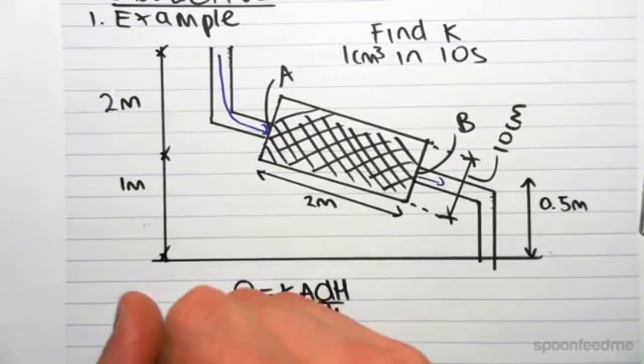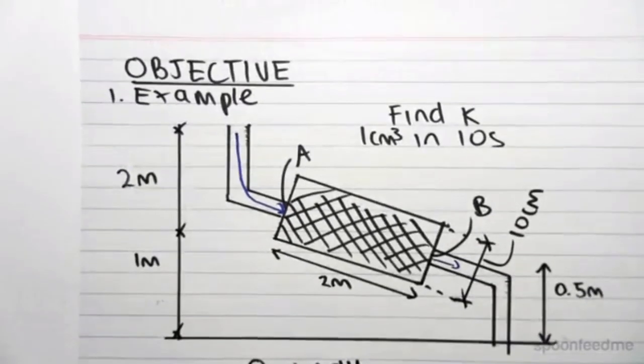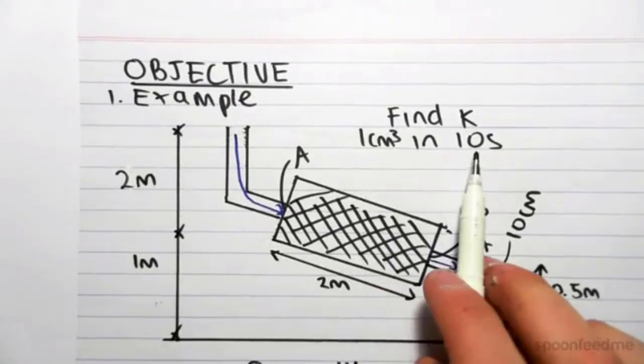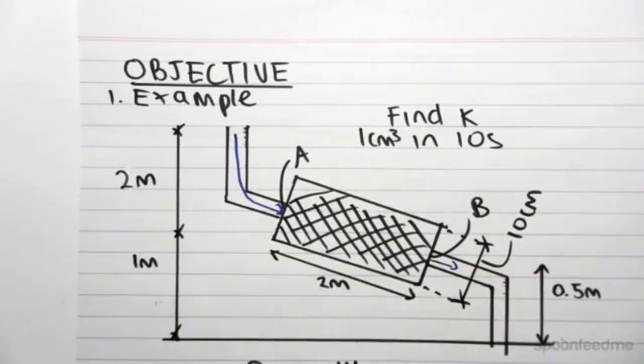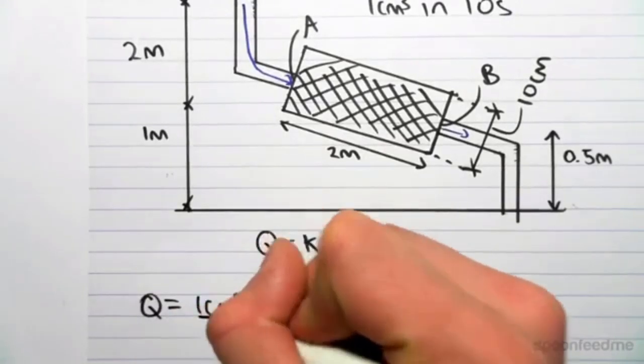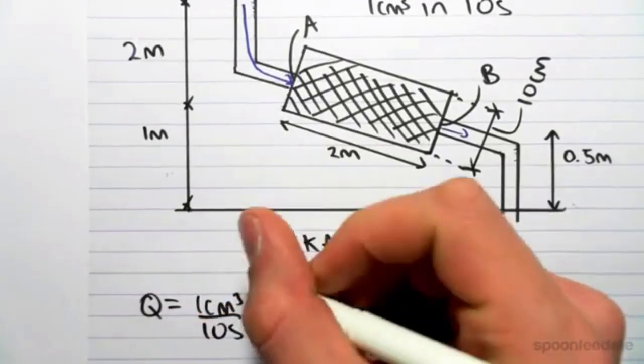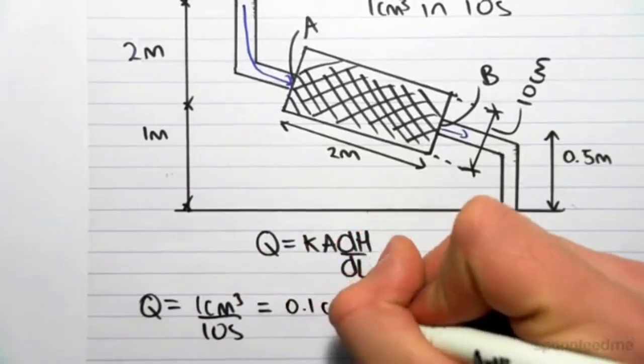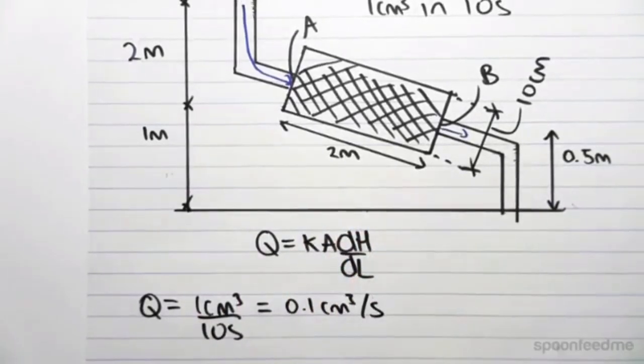So first up, q. We've been given that it takes 10 seconds for 1 cm³ of water to flow through here. So the flow rate is simply going to be 1 cm³ on 10 seconds, which is 0.1 cm³ per second. So there's our flow rate.